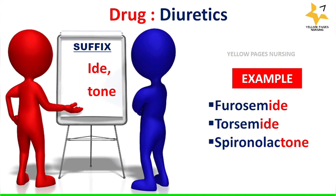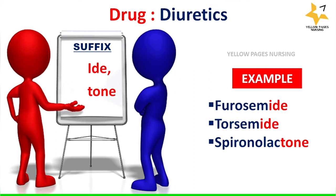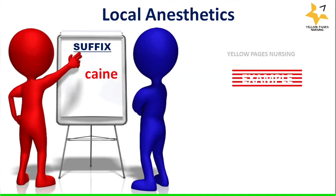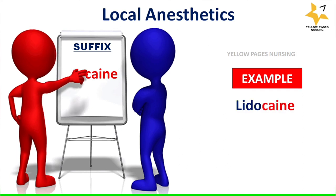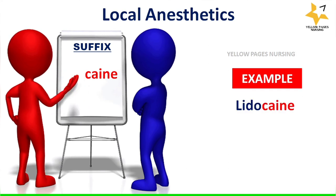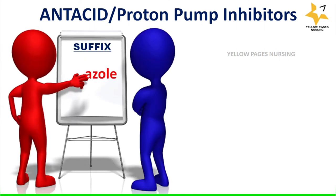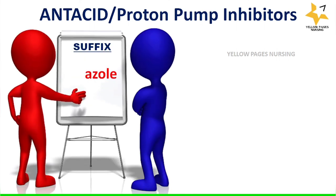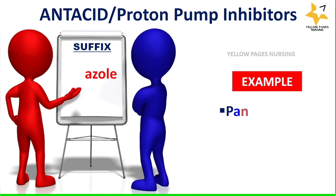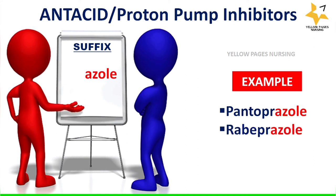Next come local anesthetics with the suffix '-caine'. Example: lidocaine. Next comes the group antacids or proton pump inhibitors with the suffix '-azole'. Examples are pantoprazole, rabeprazole, etc.